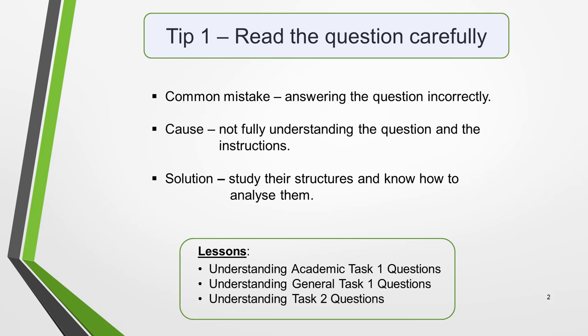Tip 1: Read the question and instructions carefully. One of the most common reasons for a low score in the writing test is not answering the question correctly. The cause of this is not fully understanding the question and the instructions. The questions are not difficult to understand, but you do need to study their structures and know how to analyse them. There are three lessons that will help you specifically with this: Understanding Academic Task 1 Questions, Understanding General Task 1 Questions, and Understanding Task 2 Questions. You'll find links to these, and all the other lessons I mention in this video, in the notes below the video.